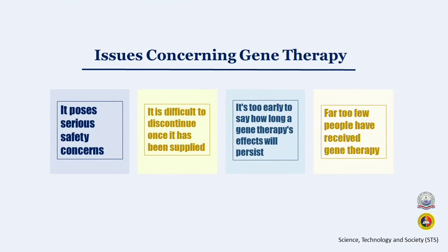Looking into the issues with gene therapy — even though gene therapy has made great progress in recent years, it still poses serious safety concerns. The insertion of a healthy gene carries risks that may not be seen until reflected in the patient's body. One significant difference between gene therapy and traditional small molecule medications or other biological products such as protein therapies is that gene therapy is difficult to discontinue once it has been administered. The resources used in gene therapy are considerable, and it would cause significant financial burden if things don't work well. It's also too early to say how long a gene therapy's effects will persist.